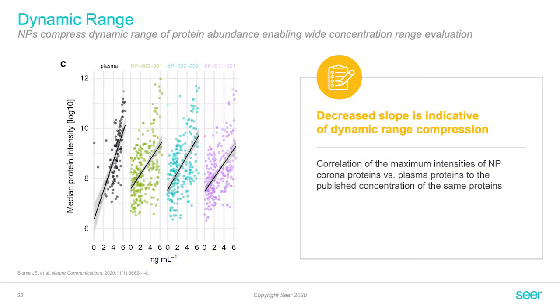The way nanoparticles work is that they compress the dynamic range, which means that low abundant proteins become more abundant throughout the assay. We can visualize that by looking at concentration versus median protein intensity plotted on the left hand side. Neat plasma shows a steep slope for the regression line, while for all three nanoparticles that slope is less steep, indicating that low abundant proteins are made more visible through ratio compression. Importantly, the line is not entirely flat, so quantitative differences are still captured when using the nanoparticles.